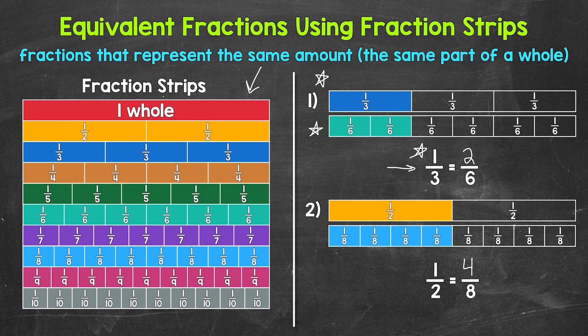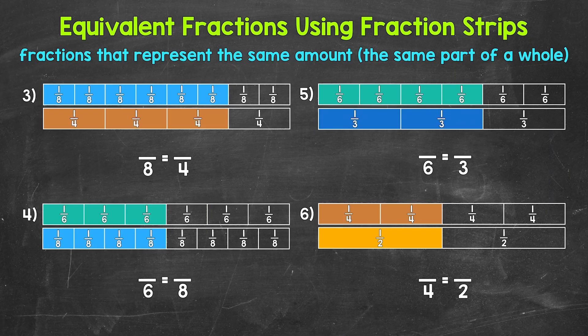Let's take a look at number three, where we have a top fraction strip divided into eight equal parts and six are shaded, so that's six-eighths. That's going to be equivalent to how many fourths? The bottom fraction strip is divided into four equal parts and three are shaded in. So six-eighths is equivalent to three-fourths. Both fraction strips are showing the same amount, the same part of the whole rectangle — six-eighths and three-fourths are equivalent.